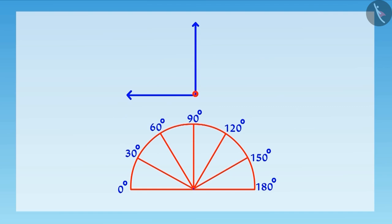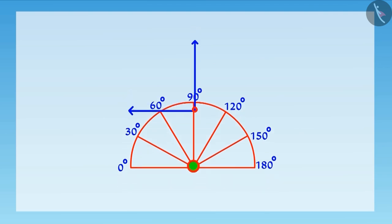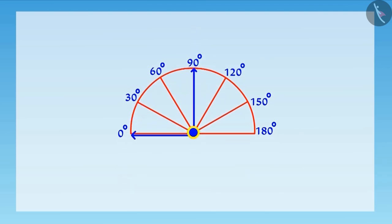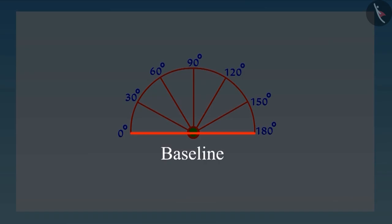Now, if we have to measure an angle, we will place the center point of this protractor at the vertex of the angle. And remember, one line of angle must be placed along the baseline of the protractor.